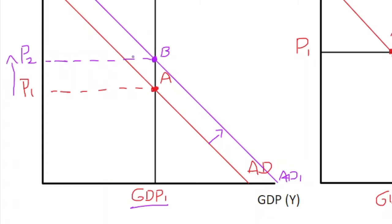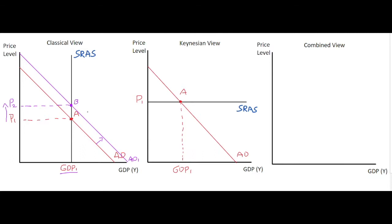This extra demand is causing inflation in the economy. So extra demand — such as expansionary monetary policy — causes inflation in the economy with no impact on real GDP.